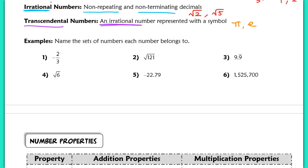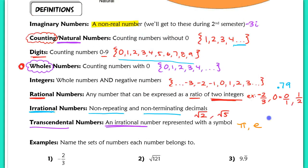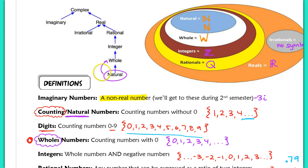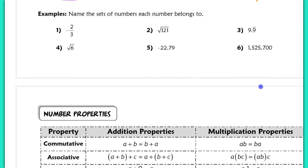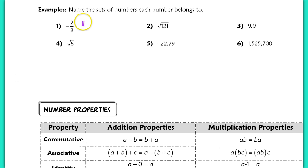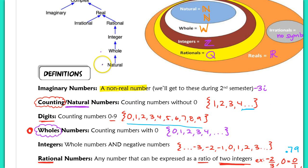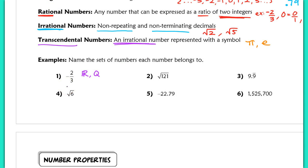Now let's classify some numbers. Many of them fit into more than one number set. For example, a natural number is also a whole number, which means it's also an integer, which means it's rational, which means it's real. For negative two-thirds: it can be found on a number line, so it's real. It can be written as a ratio, so it's rational (Q). Since it's not an integer, it cannot be a whole number or natural number.